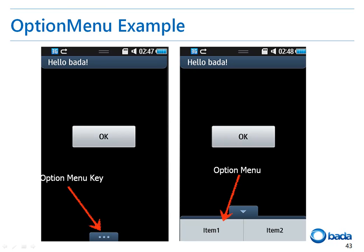Let's have a look at the option menu in more detail. The option menu refers to the horizontally arranged buttons that rise from the bottom of the form when the option menu key at the bottom of the form is pressed. Since the option menu key is the default control of the form, the developer only needs to develop the option menu.